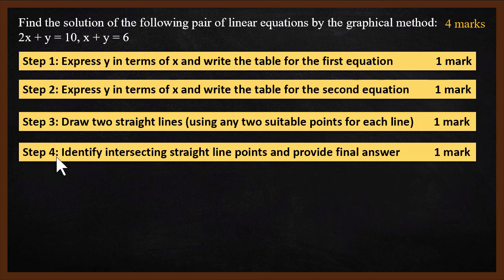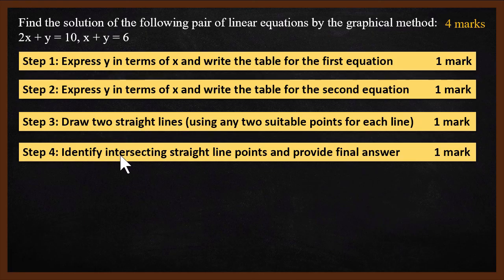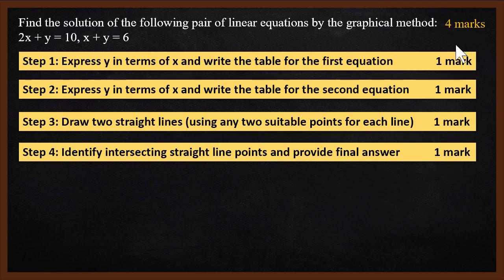Step 4: Identify the intersecting straight line point and provide the final answer. Step 4 is one mark. Total 4 marks — each step is one mark.